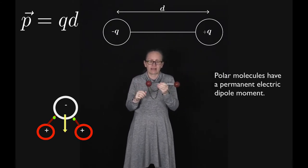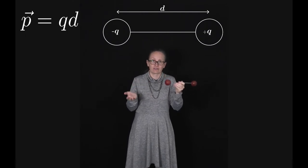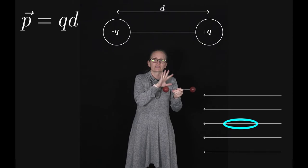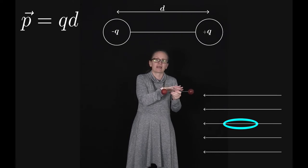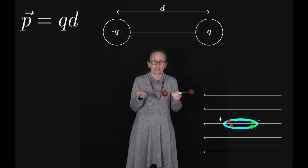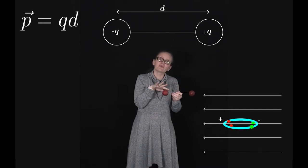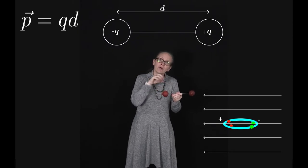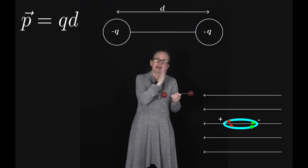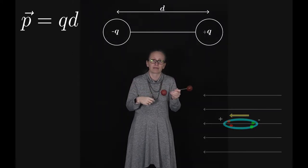If we imagine placing a non-polar molecule into an electric field, the field exerts a force on the electrons making up the bond. Because the electrons are negative, the force on them is in the opposite direction to the electric field. The electrons in the bond will move a little under this force, giving the originally non-polar molecule a positive end and a negative end — an induced electric dipole moment.